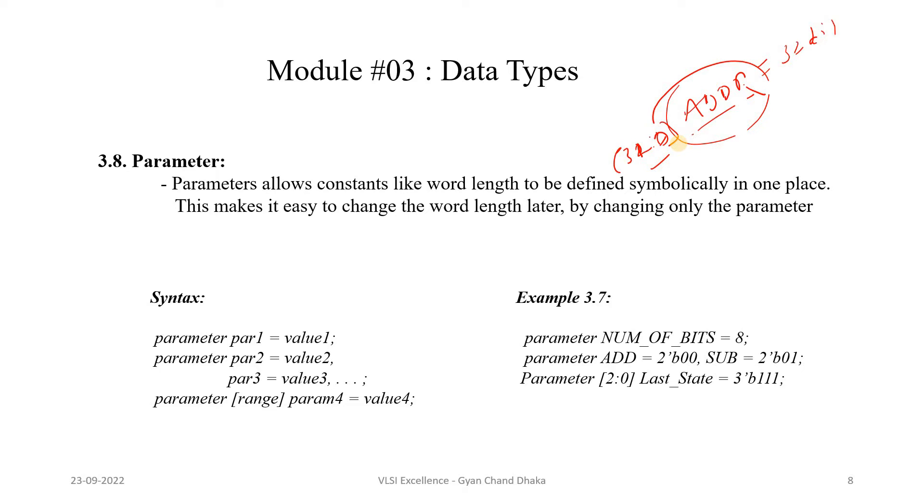If that constant value is going to be changed, we just have to change the parameter value and it will be reflected at all the places in the design. There are three ways to declare a parameter.